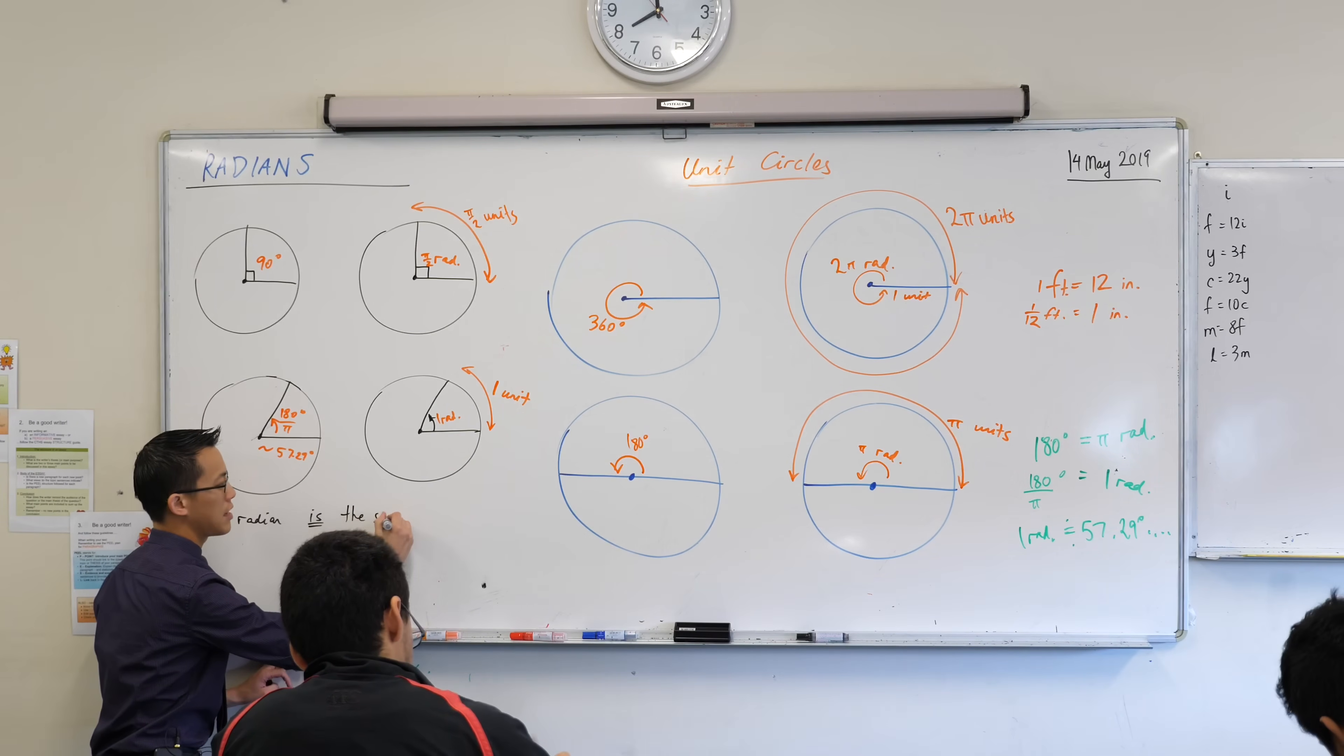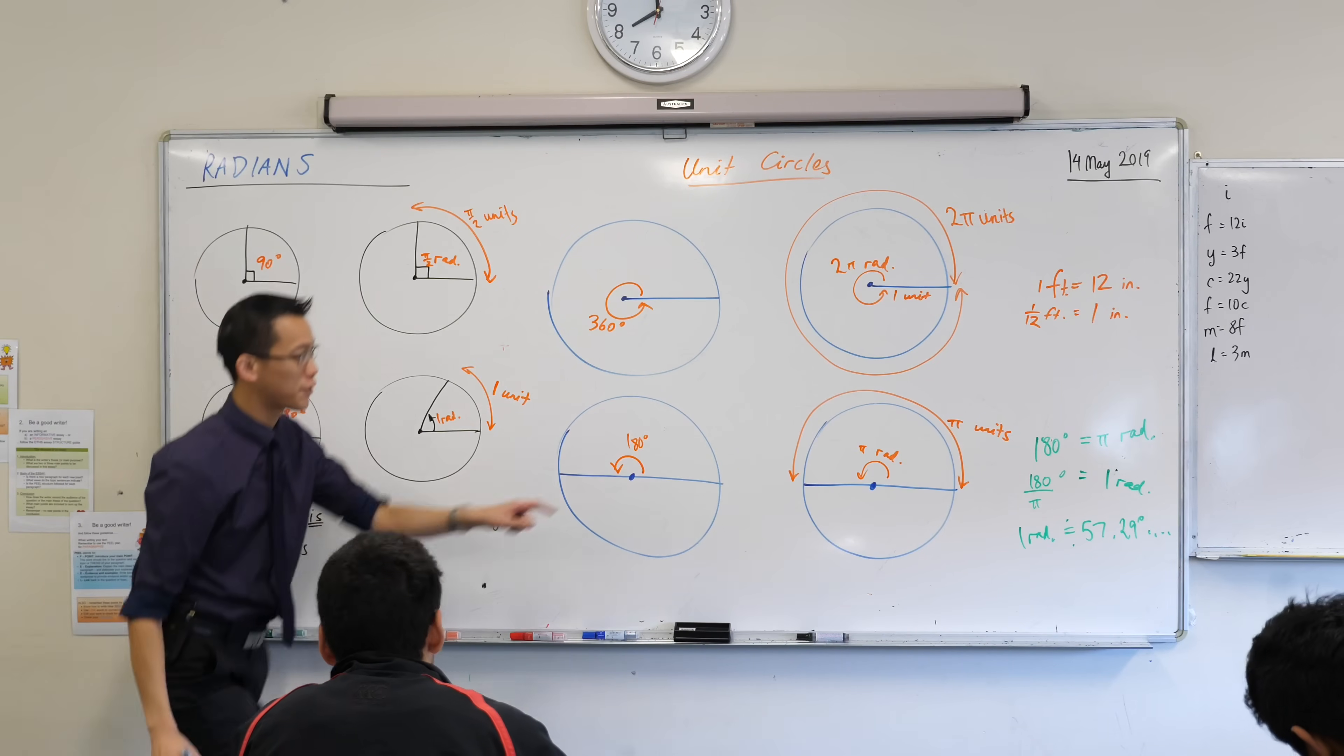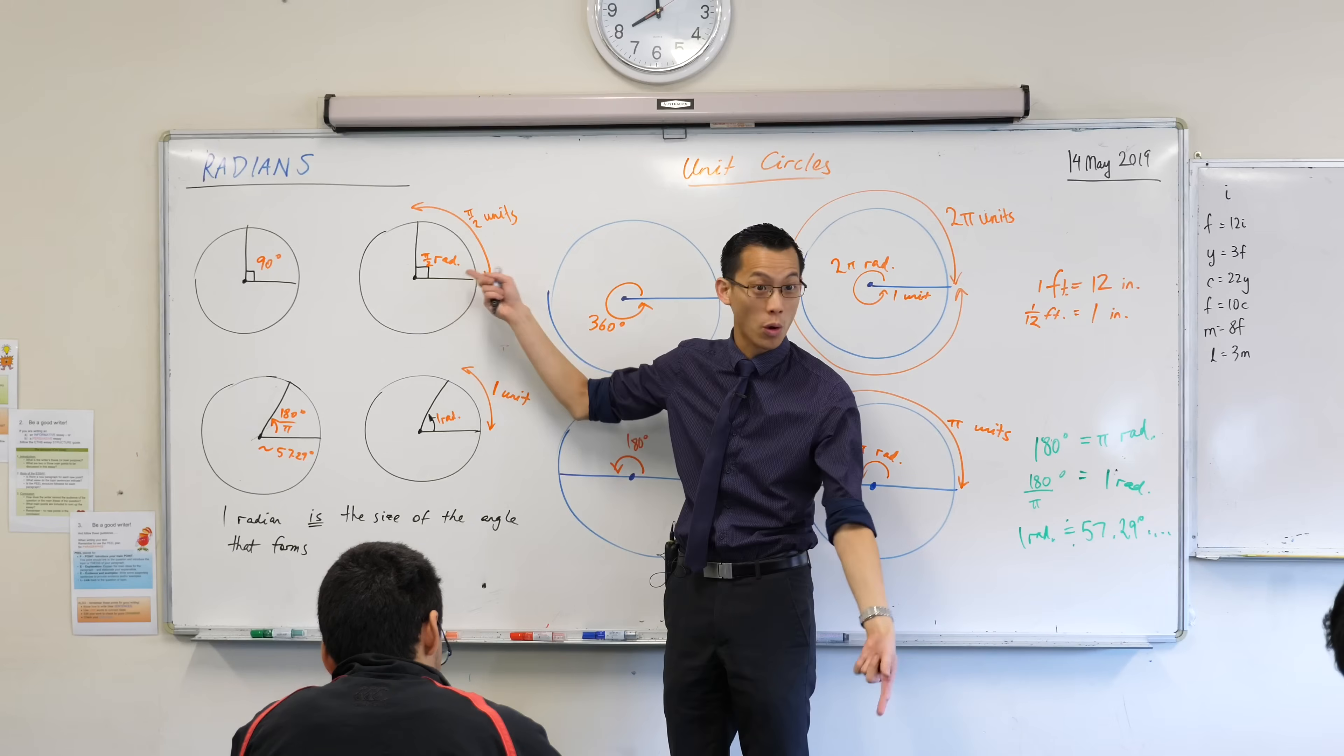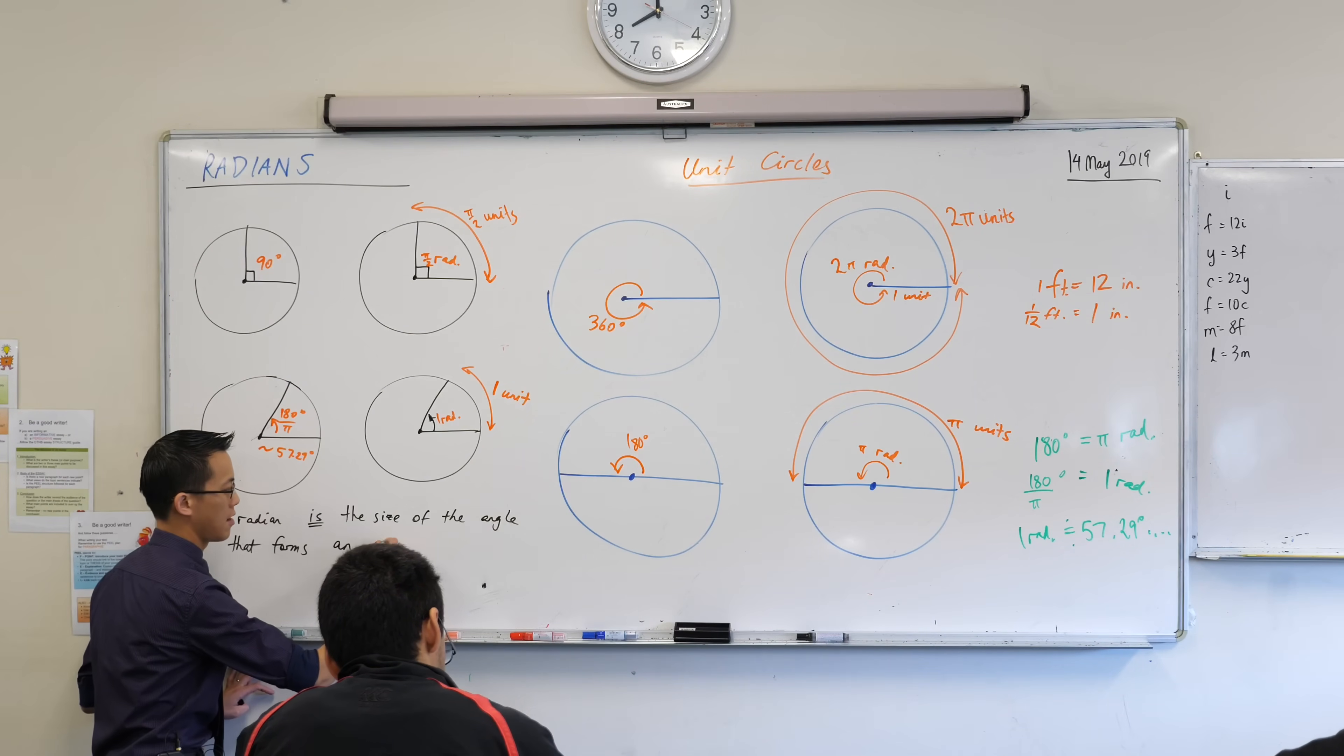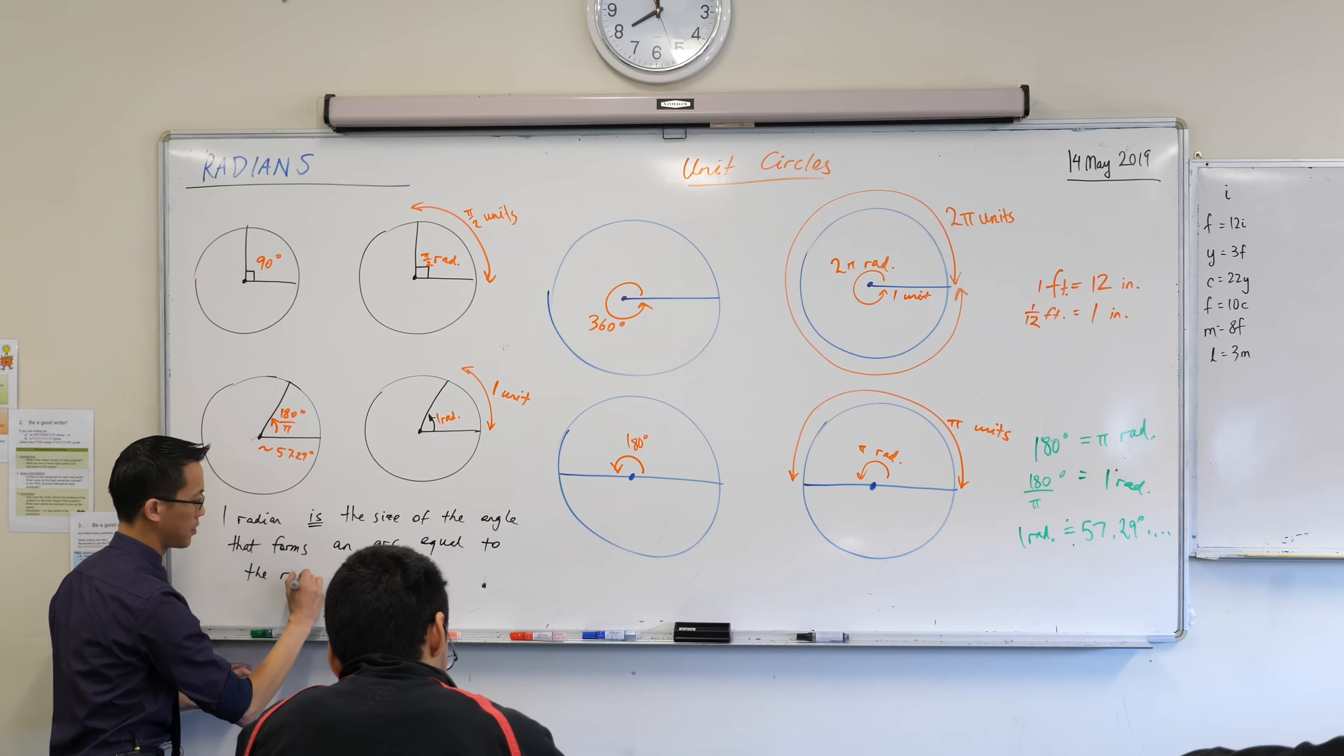One radian is the size of the angle that forms an arc. You can see all of these curved parts here, apart from this one which is the entire circumference, you'd call this an arc, semicircle, you'd call this an arc, a quarter of a circle, and you'd call this an arc, which is one unit long. One radian is the size of the angle that forms an arc, and this is the really nice part of it, that forms an arc equal to the radius of the circle.